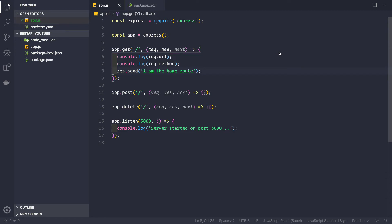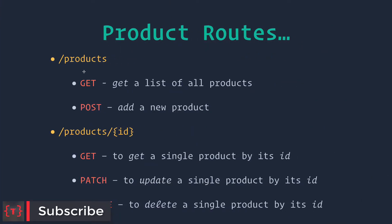Now that you know how to make a basic Express application, in this video let's create our product routes. Whenever someone goes to forward slash products and makes a GET request, they should get a list of all products. If they make a POST request to that route, they should be able to add a new product. Later we'll create forward slash products forward slash id with GET, PATCH, and DELETE methods. Let's start by creating this route in our app.js file.